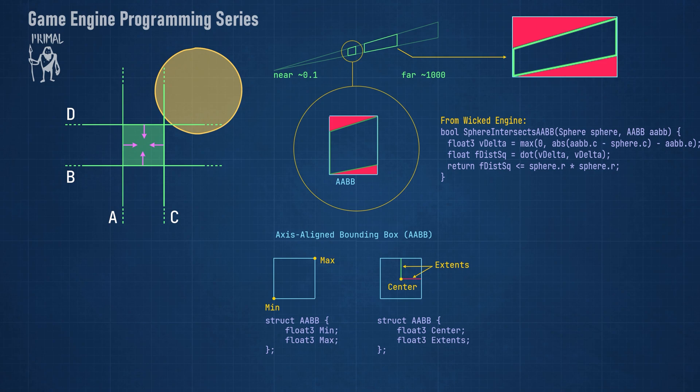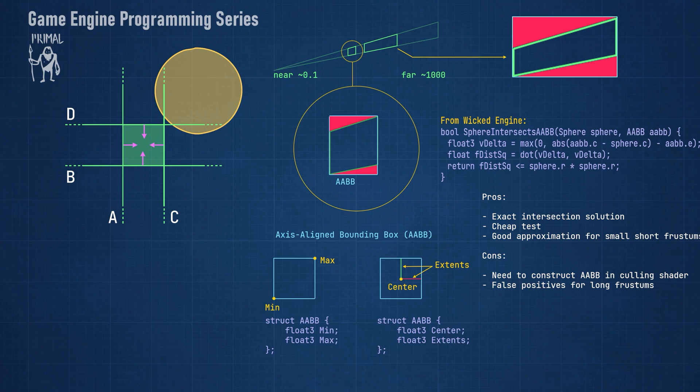To summarize the pros and cons, sphere-AABB intersection yields exact results. It's computationally inexpensive and it's a good approximation for short frustums.